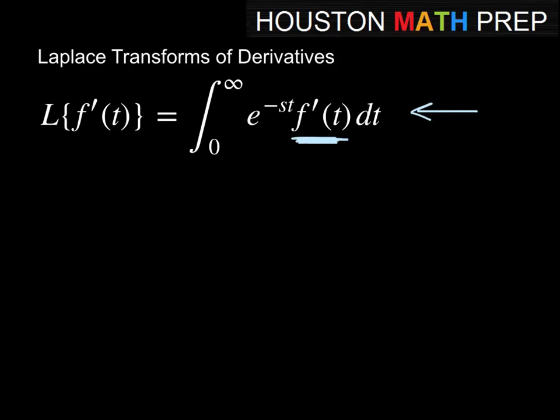We're going to do this integral by parts. We'll think of e to the minus st as one part, and f prime of t dt as the other part. The reason we choose this way is because when we integrate dv, it's easy to integrate f prime of t — we know we should get back some expression involving the original function, which is going to be convenient for us.